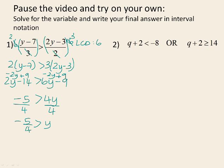In interval notation, y is less than negative 5 over 4, which means all the numbers are smaller than negative 5 over 4. So it will start at negative infinity, and negative 5 over 4 is not included, so it gets a round bracket.